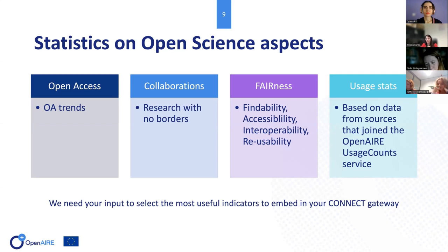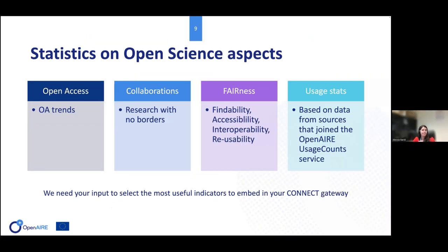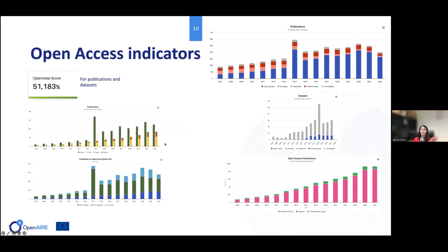There is plenty we can offer, and I would like to ask for your help and input to select the indicators most useful to you. I'll show you the indicators and then ask for your input. Some indicators available to understand maturity in open access publishing include the percentage of open access publications, their distribution over the years, and their breakdown by open access route: green, gold, hybrid, or bronze, depending on the venue used to publish.